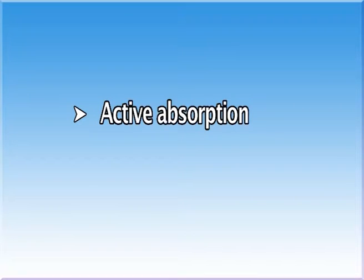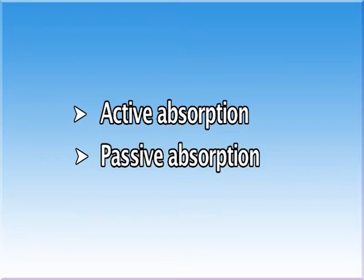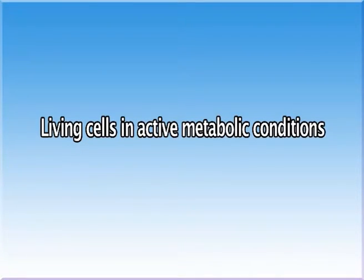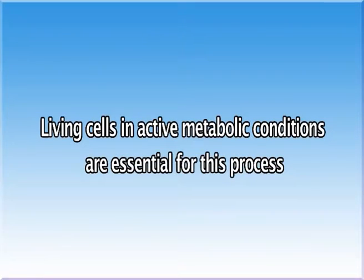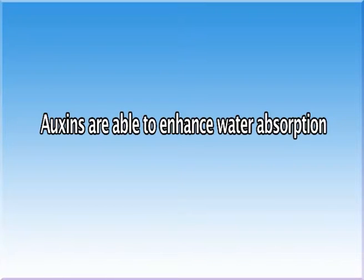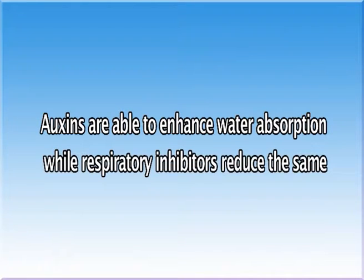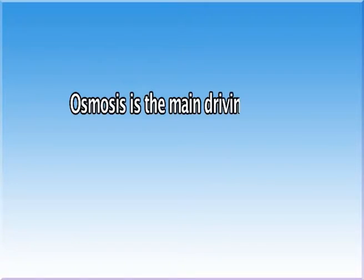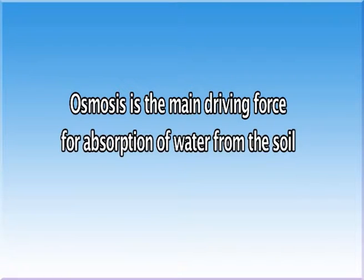Water absorption is of two types: active absorption and passive absorption. Active absorption is the absorption of water due to forces present in the root living cells; active metabolic conditions are essential for this process. Auxins are able to enhance water absorption while respiratory inhibitors reduce the same. Therefore, energy from respiration is involved in active absorption. Osmosis is the main driving force for water absorption from the soil to the root tissues.